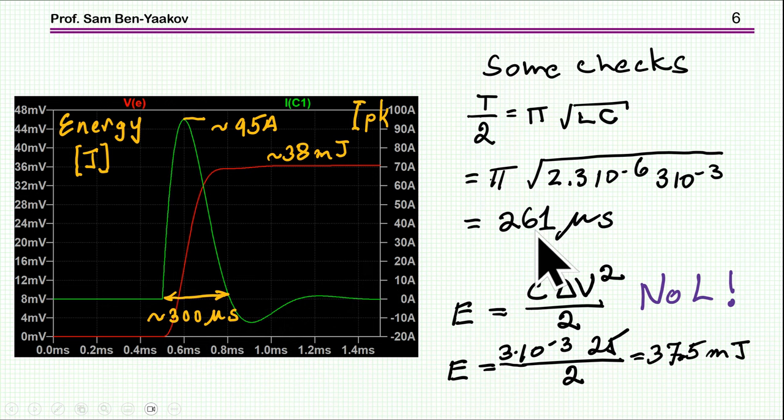So this is 300 versus 261. This is not surprising because we know that when you have a quality factor which is not very high, there is a correction factor to this expression of square root of LC depending on Q. This makes sense. I'm not going to write this equation because I like to leave everything at the level of intuitive understanding. On the other hand, charging a capacitor by voltage entails power loss. We know that the power loss is C delta V squared over 2, and this is without an inductor. This comes to be 37.5 millijoules.